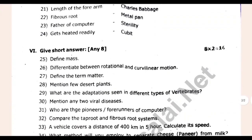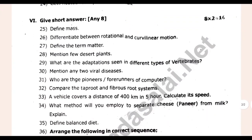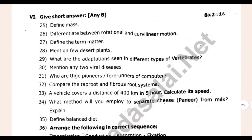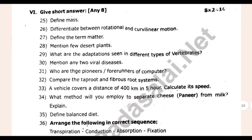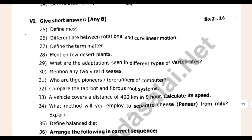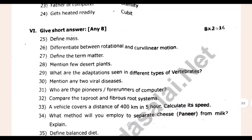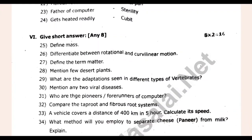The next step is two more questions. Define mass, the term matter, desert plants, and two viral diseases — it will be easy to get two marks. First, identify biology. Can you choose two between chemistry, physics, and biology? You might choose one next semester.